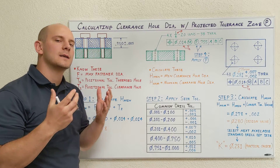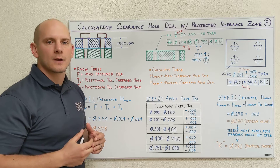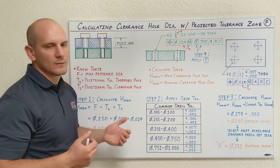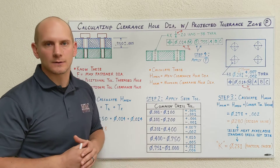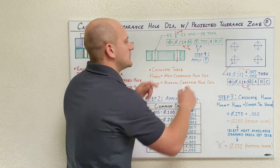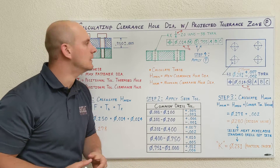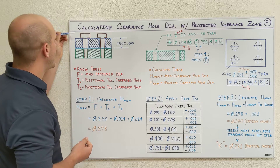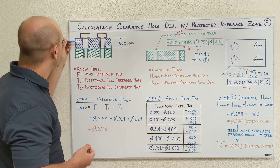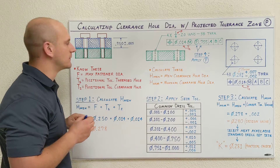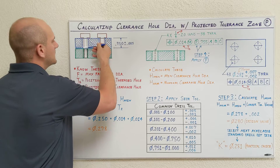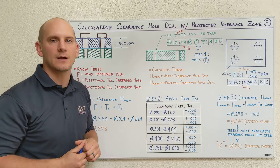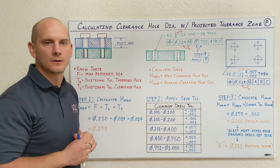Why do we want to calculate our clearance holes rather than relying on those standard close and free-fit values that we can get from our CAD packages and from mechanical design references such as tap drill charts? Well, if these parts are machined to their worst case and you go to assemble them using those standard values, you could potentially get interference between the sidewalls of your clearance holes and the surfaces of your fasteners. It's because you relied on the standard value rather than knowing with 100% certainty by calculating the value. So let's calculate our clearance hole diameters.